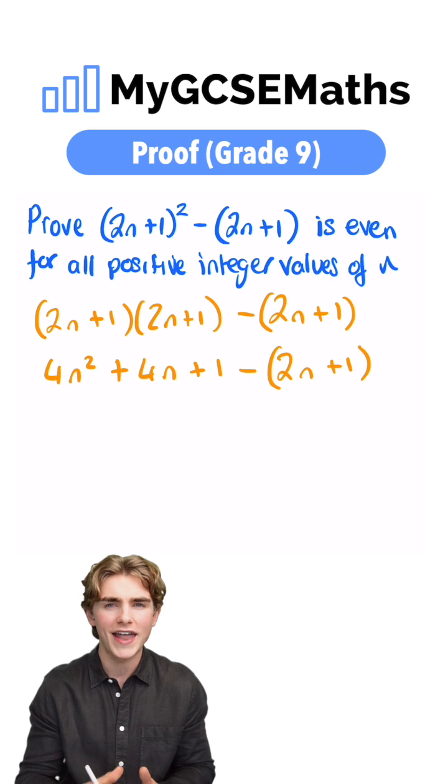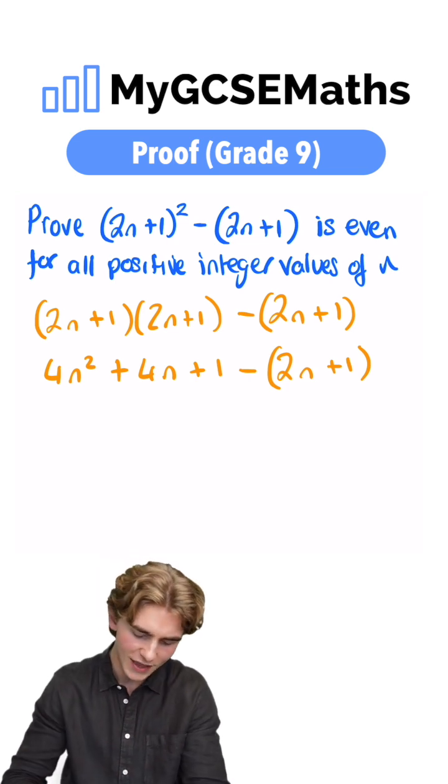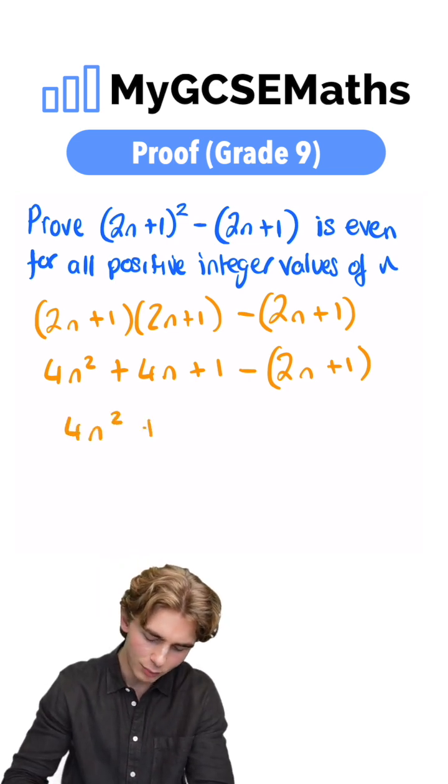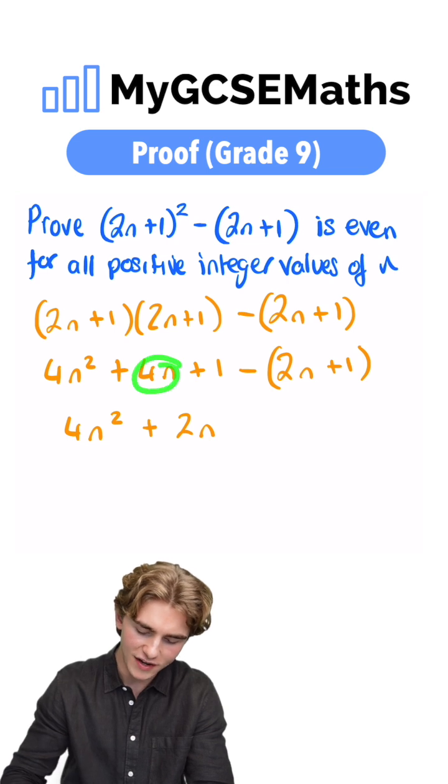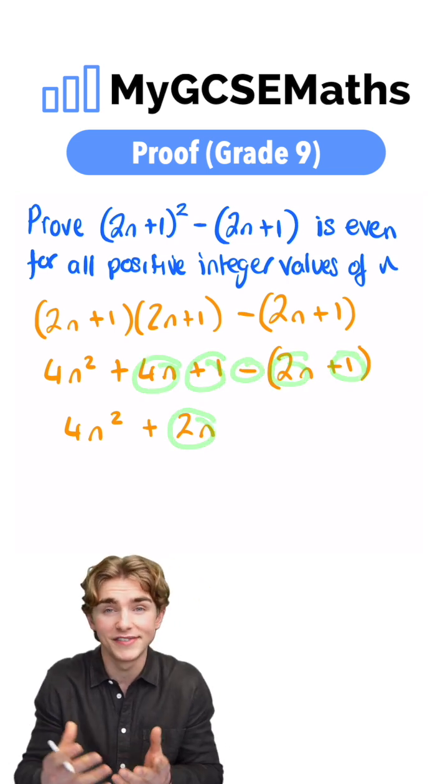Now we're subtracting the 2n and subtracting the 1, so this is going to give us 4n squared plus 2n. That's because 4n subtract 2n is 2n, and 1 subtract 1 just cancels out to 0.